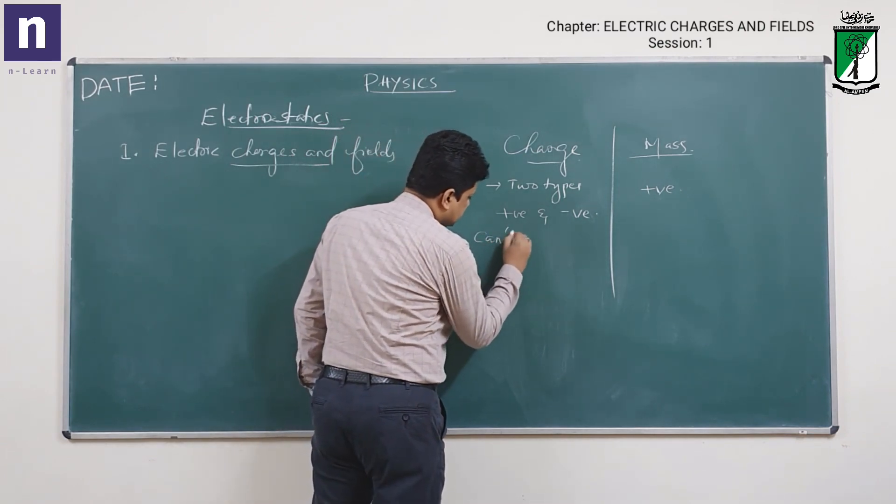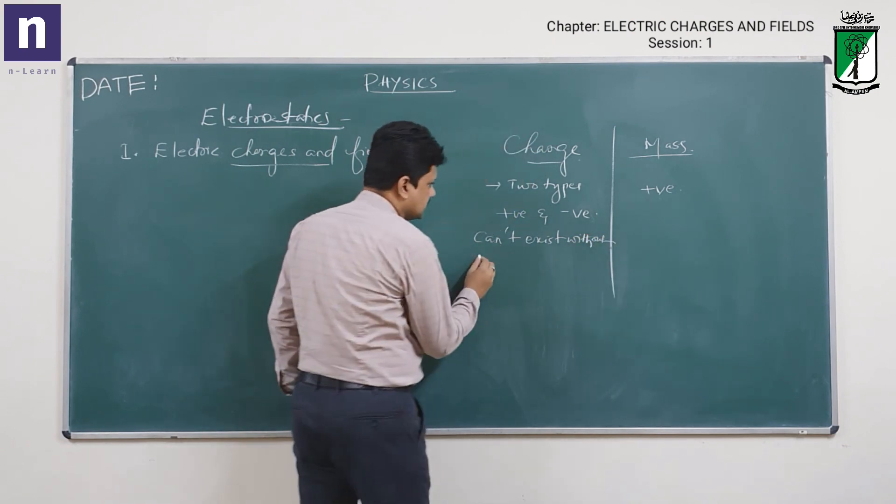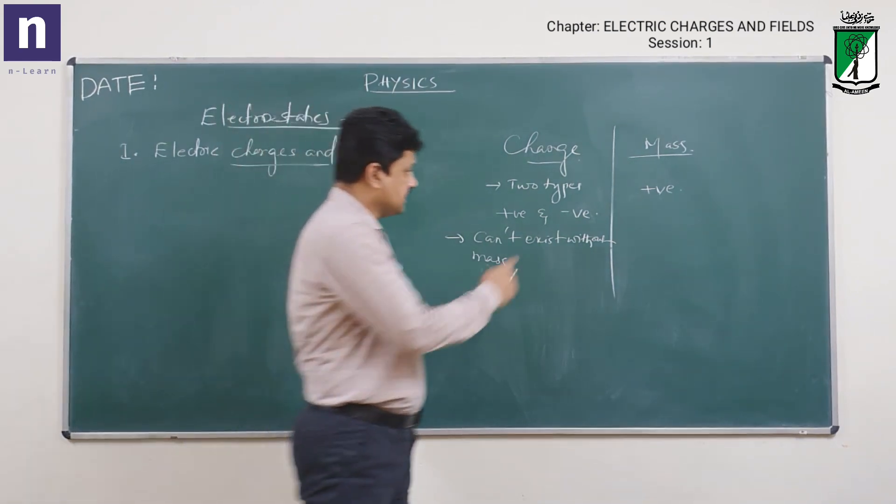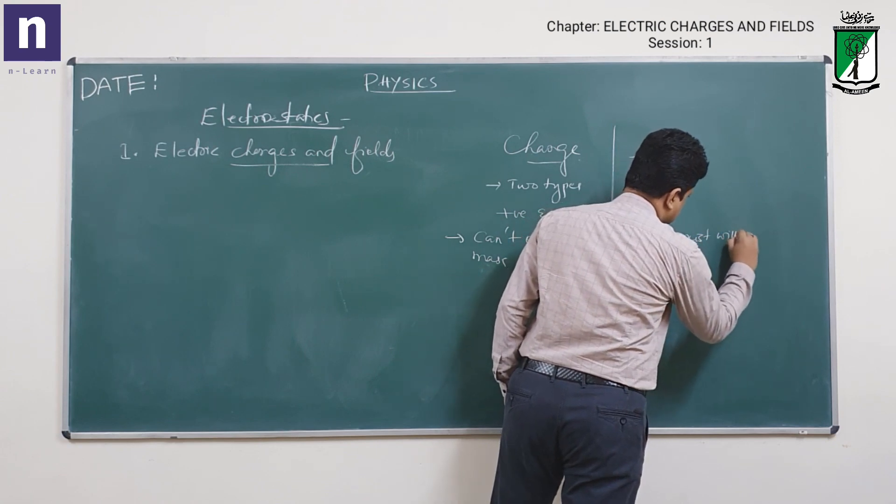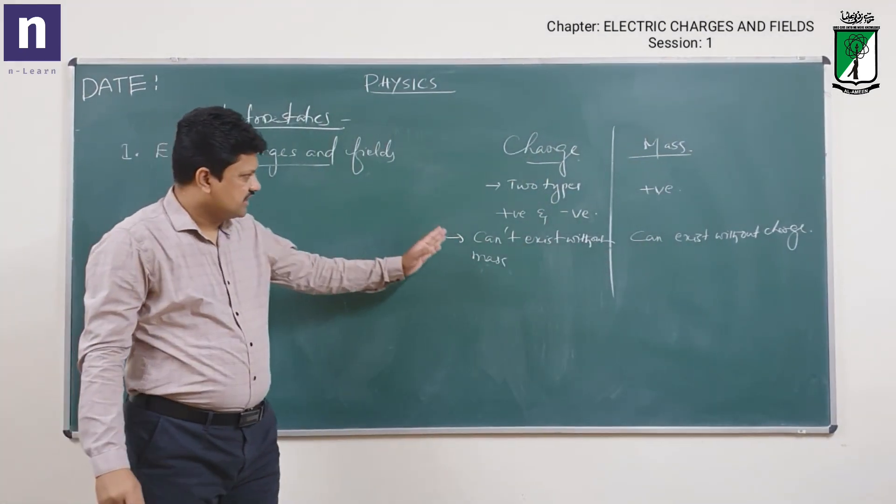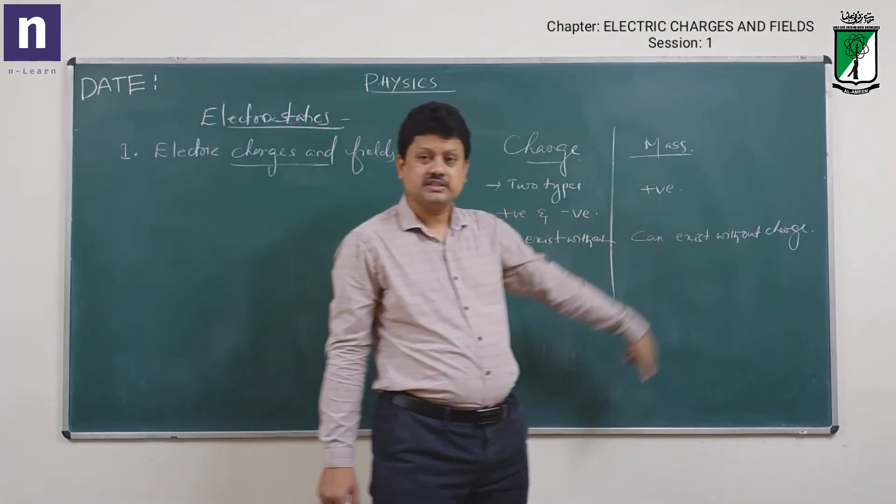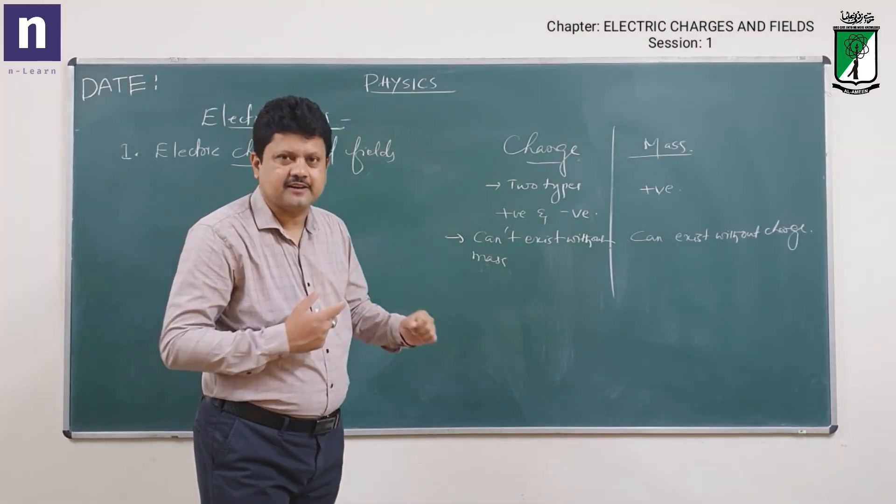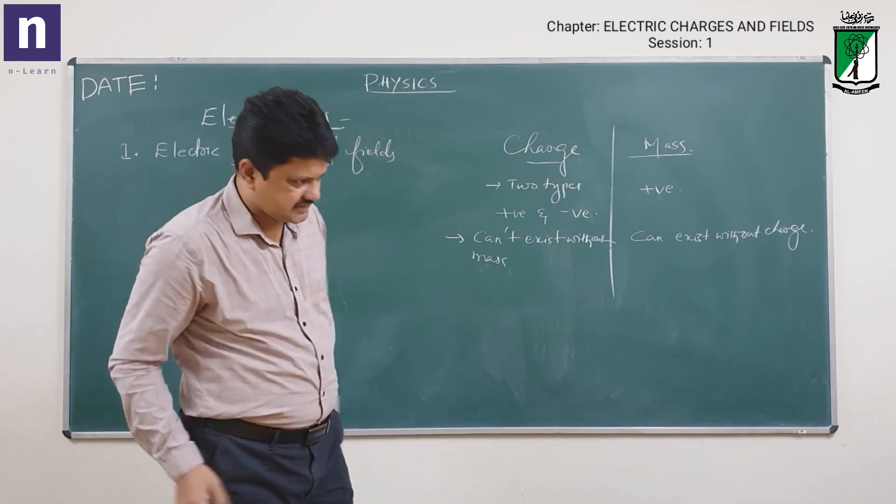Charge cannot exist without mass. This is another characteristic. But mass can exist without charge. The charges sit on the mass. So whenever you move a charge from one place to another, it means that you are also moving the mass with it. Without mass, charges cannot exist.